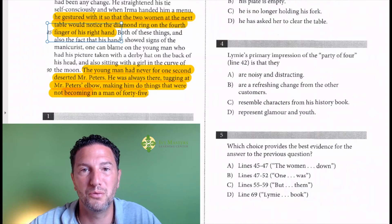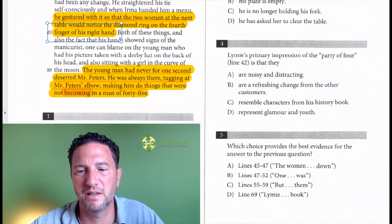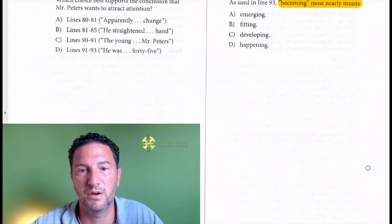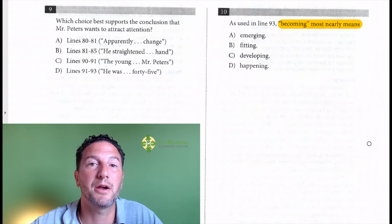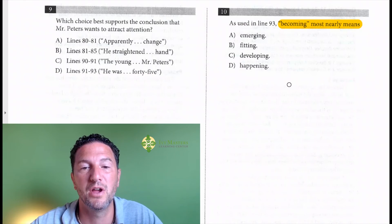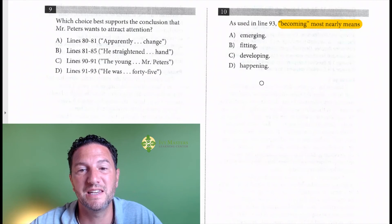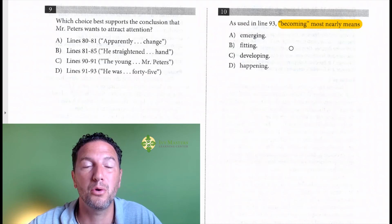So when it says it's not becoming of a man of 45, you would want to think of your own word. And I have my own word in mind, but I'm not going to say it unless it's not an answer choice. And so we go to the answer choices. I would say it's not appropriate for a man of 45. So what I've got to do is I've got to see what best matches some behavior being not appropriate for a man of 45.